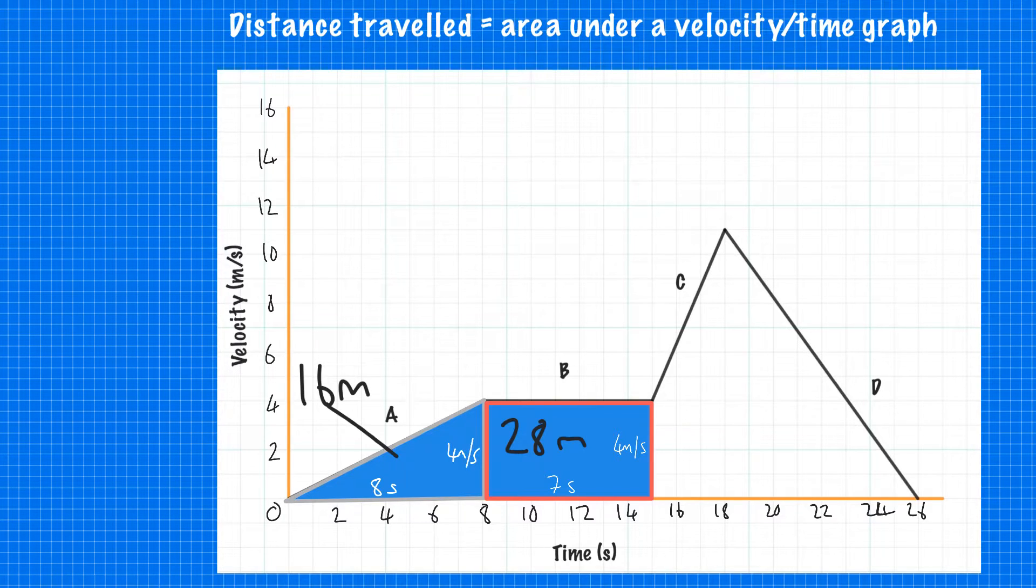For section C, you split it into two shapes: a rectangular base and a triangle on top. If you find the total area there, you find the distance traveled in section C.